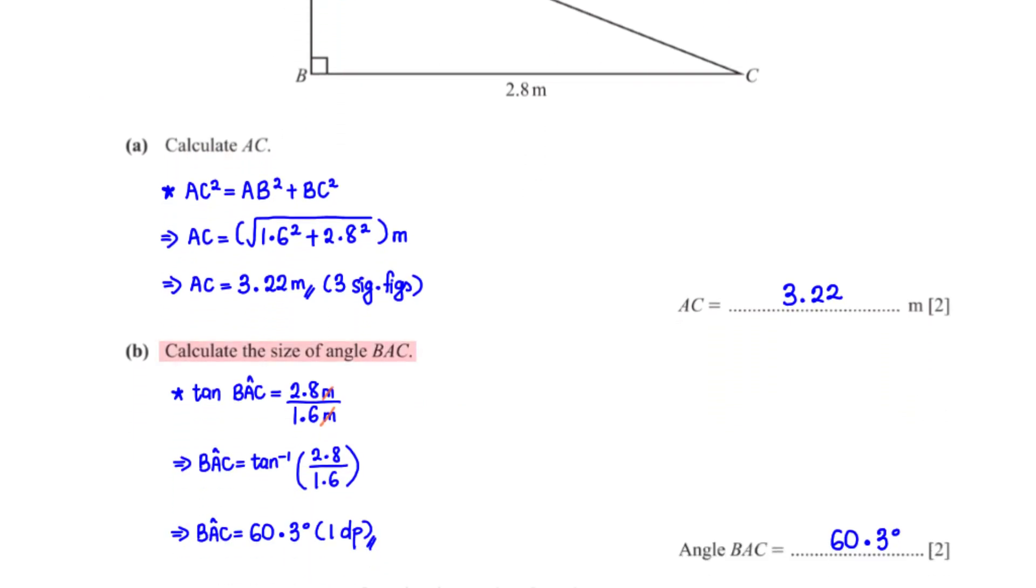Calculate the size of angle BAC. To get this angle, we apply SOHCAHTOA to the triangle. This gives us tan of angle BAC equals 2.8 meters divided by 1.6 meters. When we make angle BAC the subject, this is what we get. When we type this into the calculator, we get 60.3 degrees rounded to one decimal place.